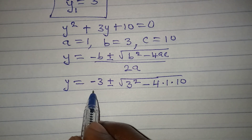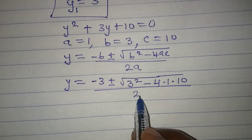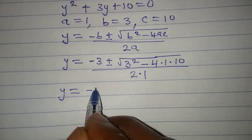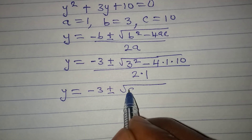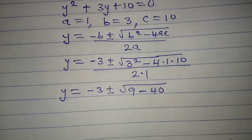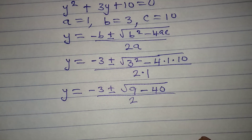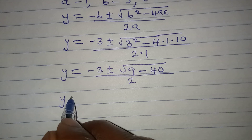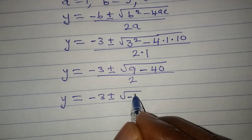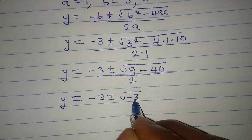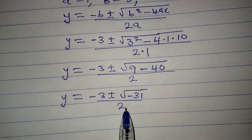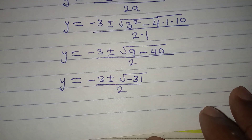Substituting: y equals minus 3 plus or minus square root of 3 squared minus 4 times 1 times 10, all over 2 times 1. So y equals minus 3 plus or minus square root of 9 minus 40, all over 2. That gives minus 3 plus or minus square root of minus 31, all over 2.